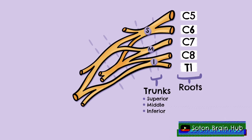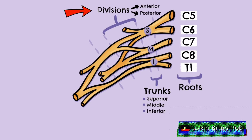Each trunk divides into an anterior or posterior division. This is an important dichotomization we can use to help remember muscular innervation, as all fibers in the anterior divisions will go on to supply muscles in the anterior compartment of the arm, and all fibers in the posterior divisions will go on to supply muscles in the posterior compartment of the arm.